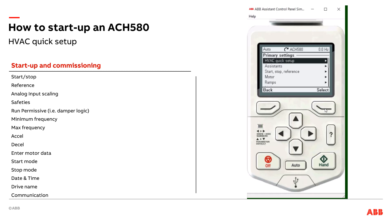I'm going to go ahead and hit select on the HVAC Quick Setup. First thing on the list is where does the drive get a start/stop signal from? Factory default is digital input one — that's the relay output from a controller coming into the drive, landing on digital input one. If I wanted to change that, say make that start/stop from BACnet, I could go ahead and edit and go into it. But I'm going to leave that at start/stop on digital input one.